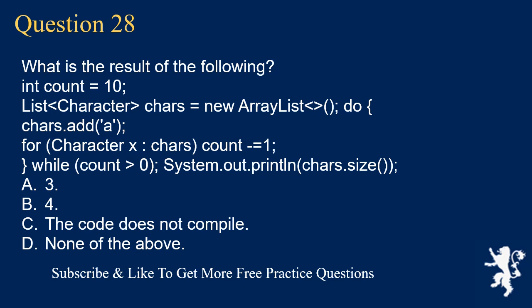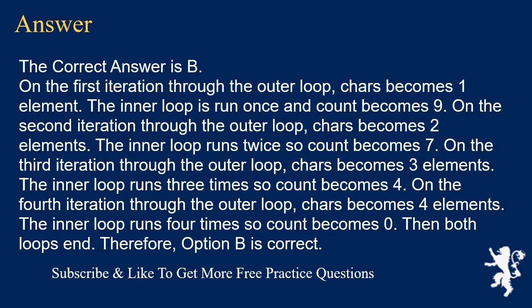Question 28. What is the result of the following? int count = 10; List<Character> chars = new ArrayList<>(); do { chars.add('A'); for (Character x : chars) { count -= 1; } } while (count > 0); System.out.println(chars.size()); A. 3. B. 4. C. The code does not compile. D. None of the above. The correct answer is B. On iteration 1, chars has 1 element and count goes to 9. On iteration 2, chars has 2 elements and count goes to 7. On iteration 3, chars has 3 elements and count goes to 4. On iteration 4, chars has 4 elements and count goes to 0. Both loops end. Option B is correct.